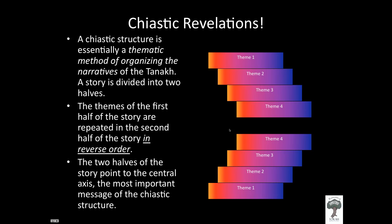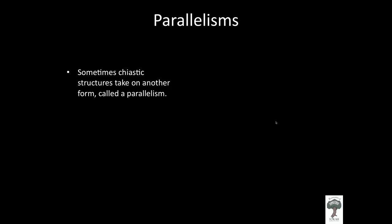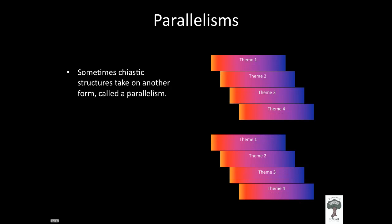All of the themes in the first half will be repeated in the second half of the chiastic structure, and both halves point to what is called the central axis. Sometimes the central axis does not exist, and we'll talk about those. There's another thematic pattern in scripture — sometimes chiastic structures take on a form called a parallelism.